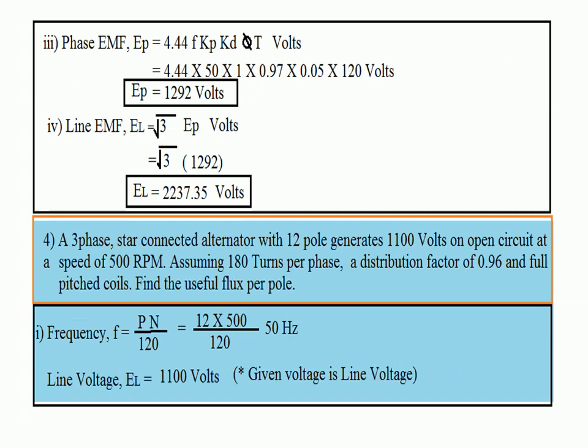After that, go directly to phase EMF. Phase EMF = 4.44 × Kp × Kd × F × φ × T — 5 things, remember 5 fingers, 5 data. Substitute all values: phase EMF = 1292 volts. Alternators and synchronous generators are star connected, hence line EMF = √3 × phase EMF = 2237.35 volts. This is also asked in examinations and internal assessments for 8 marks.